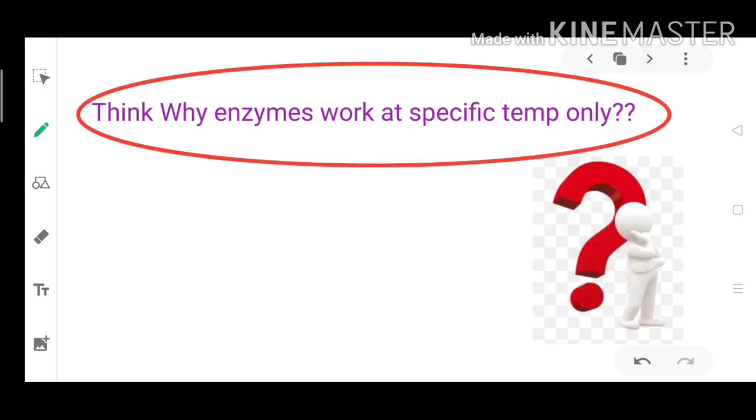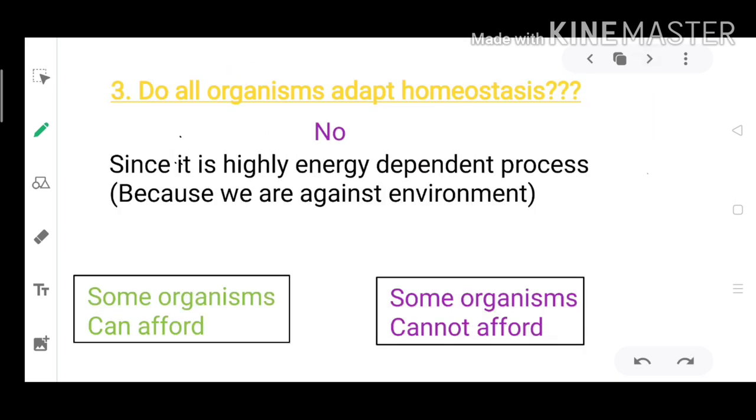Think, why do enzymes work at specific temperature only? Till now, we have discussed what is homeostasis and what is the significance of homeostasis. Now, do all organisms adopt homeostasis? Well, the answer is no. Why? Because homeostasis is a highly energy dependent process, and all organisms cannot afford it.